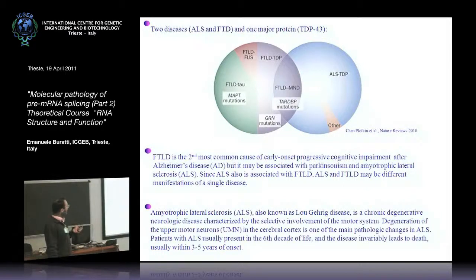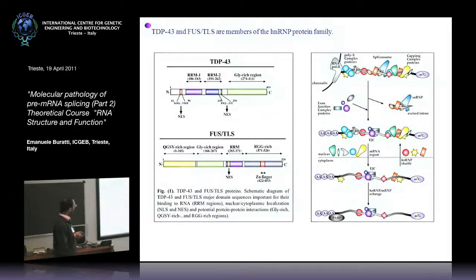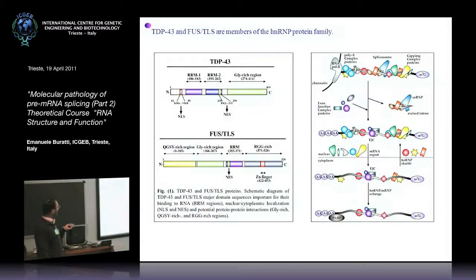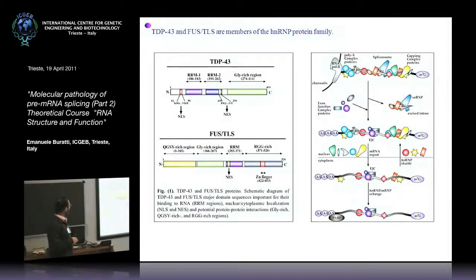These two diseases were recently, in 2006, joined together by the identification of the protein responsible for causing them. This protein is called TDP-43, which stands for TAR-DNA binding protein. It is an apparently very classical HNRNP protein — only 400 residues long, with two RNA recognition motifs useful for binding RNA.